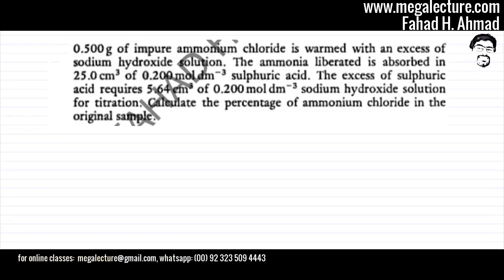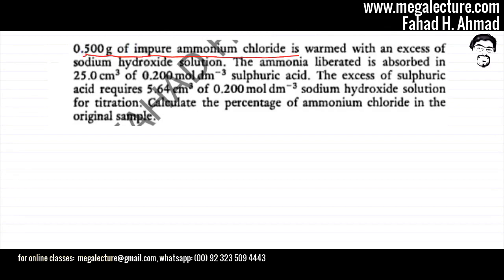We're going to try and solve the following question on percentage purity. The question states that there's 0.5 grams of impure ammonium chloride and it's reacted with an excess of sodium hydroxide solution. Let's focus on the first part of the statement which I've underlined, and let's try and make an equation first.